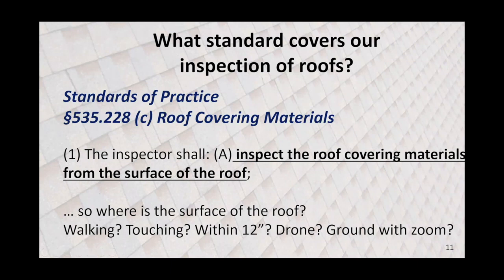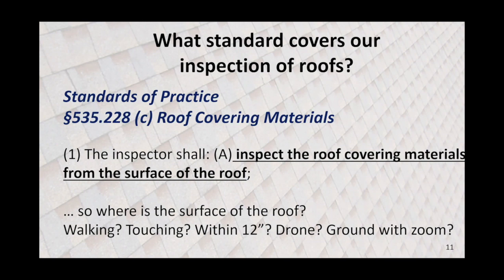If I'm flying my drone and I get it right on top of that roof — if I'm within 12 inches, I'm probably seeing the roof better than when I walk it. What about roofs I can't get to? I've got a fantastic monocular I can look through, and it looks like I could reach out and touch it. I've got a camera with a 50-times zoom. What is 'from the surface'? That's always the big question.